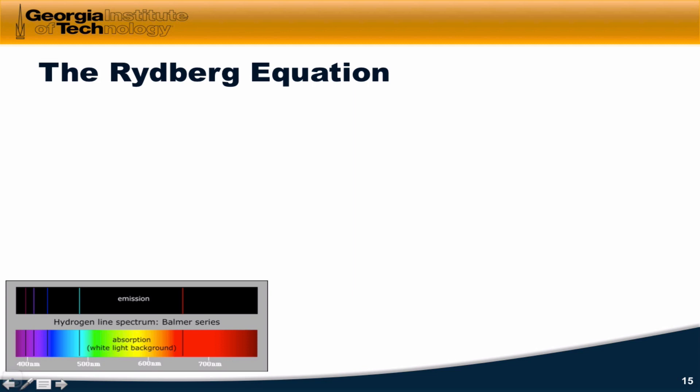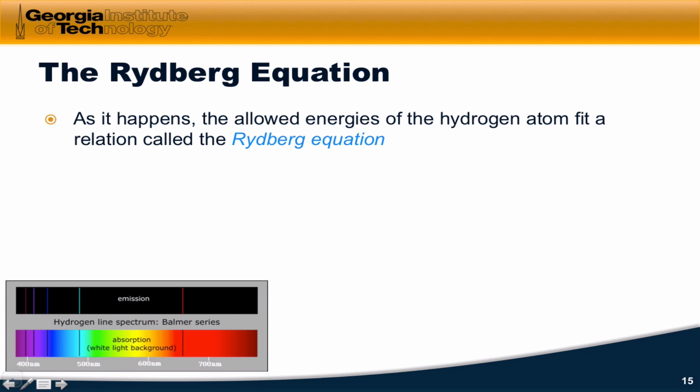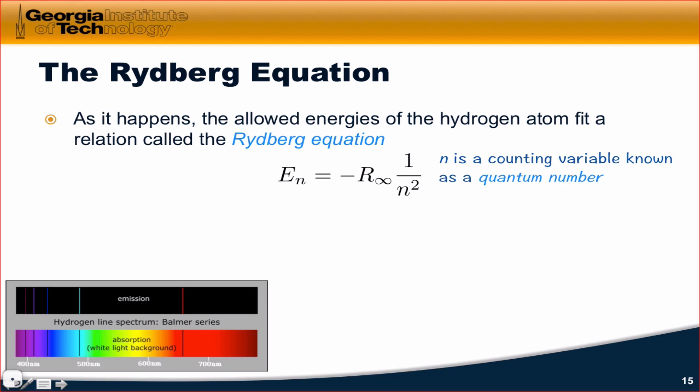The pattern they follow is captured in mathematical form by what's called the Rydberg equation. So, as it happens, and this was figured out by Rydberg actually long before quantum mechanics came along, the energies of the hydrogen atom are inversely proportional to an integer n. The energies that are allowed for the electrons in the hydrogen atom are equal to negative r infinity times 1 over n squared. n is what we'll call a quantum number.